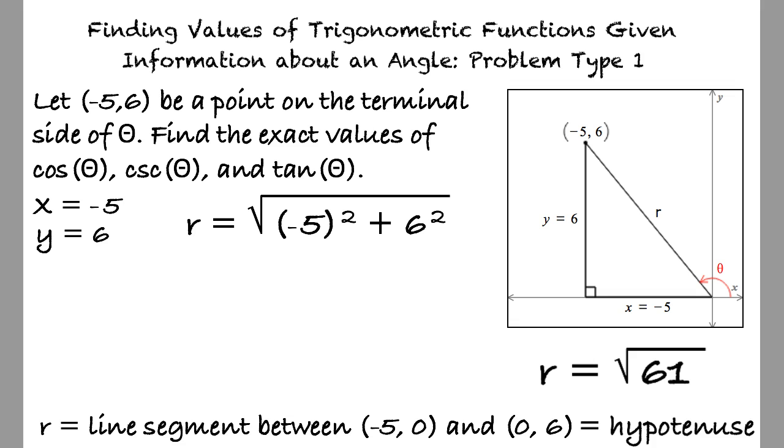Exactly. θ is the value of the angle on the terminal side. We can say that cosine is equal to -5 over the square root of 61, since that is the adjacent side over the hypotenuse. Simplifying -5 over √61 yields -5√61 over 61.